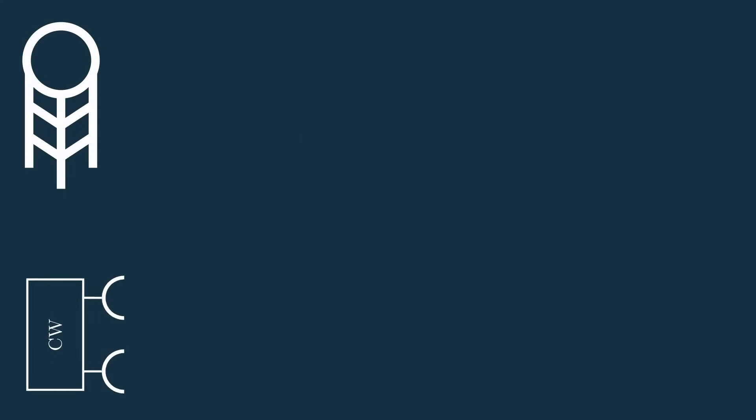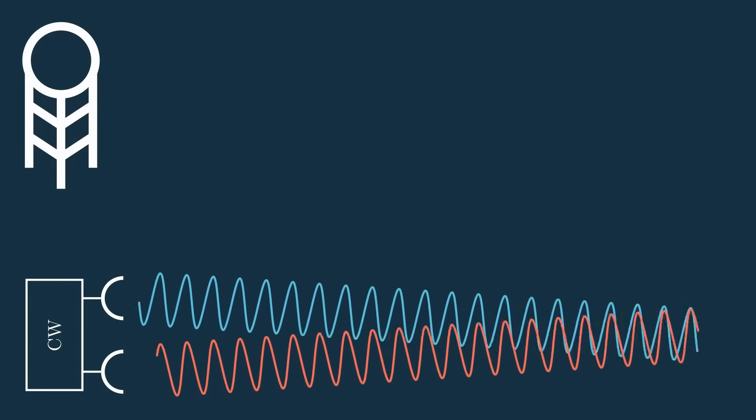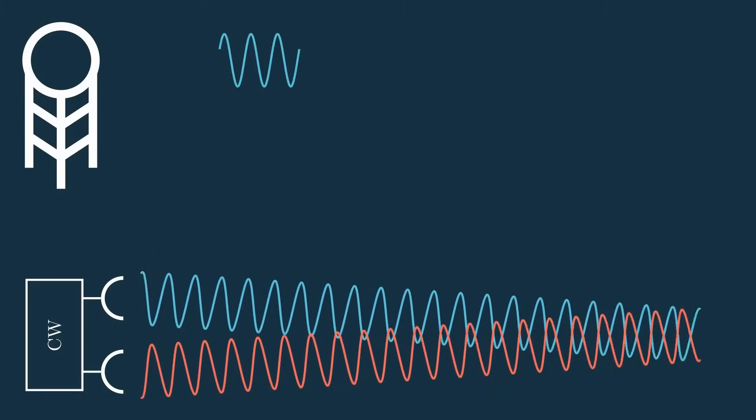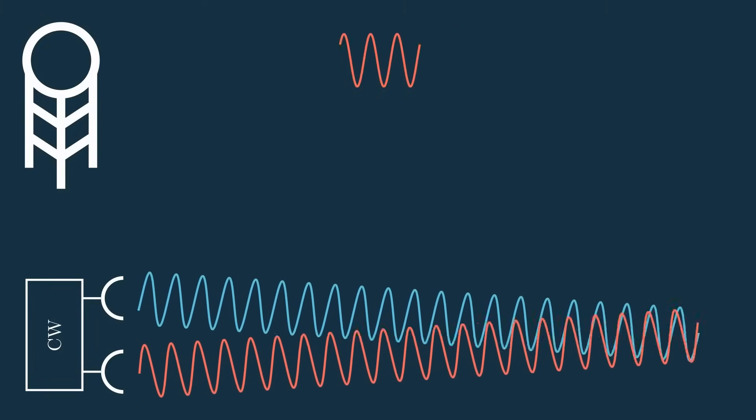On the other hand, a continuous wave, or CW signal, doesn't pulse but remains on for the entire period, transmitting and receiving the whole time. And in this simple case, for illustration, we're just using a sine wave, but that'll change in a second.